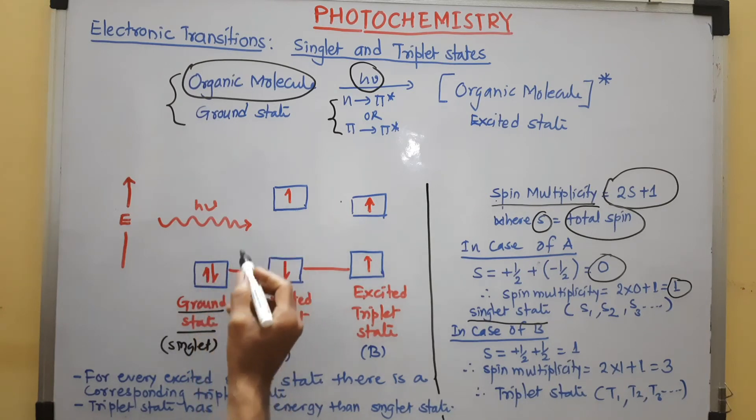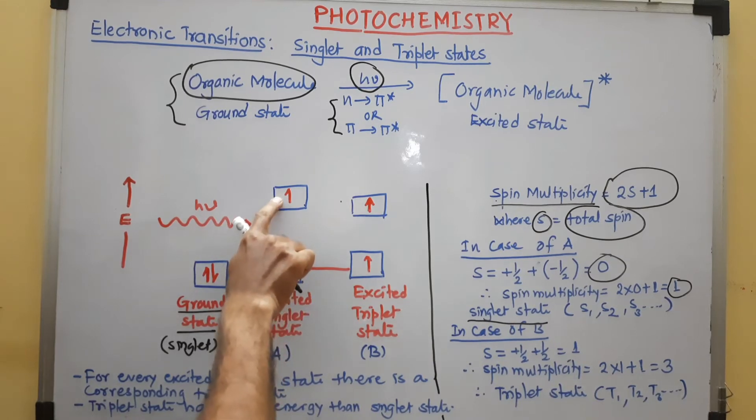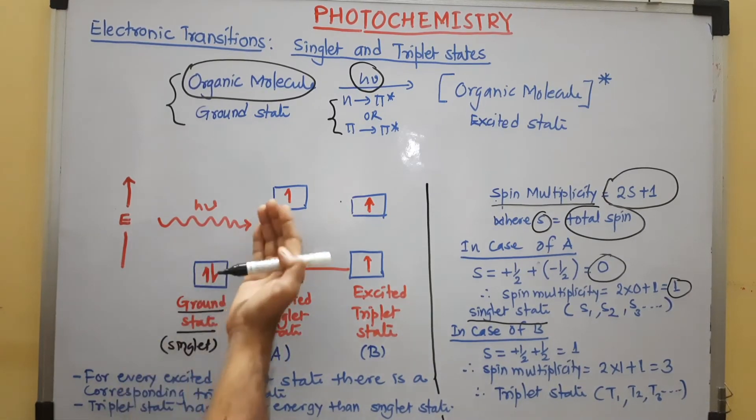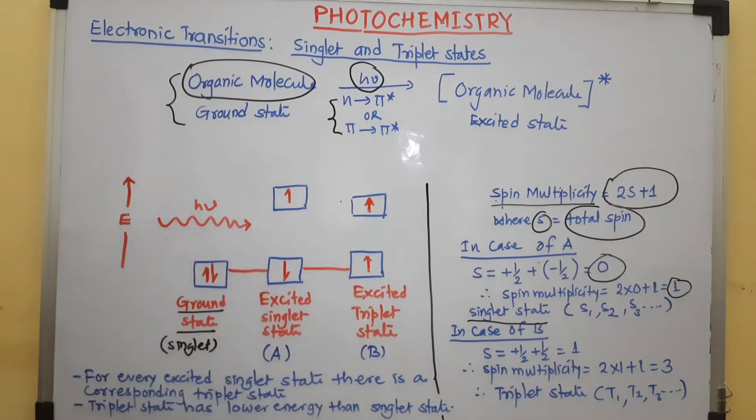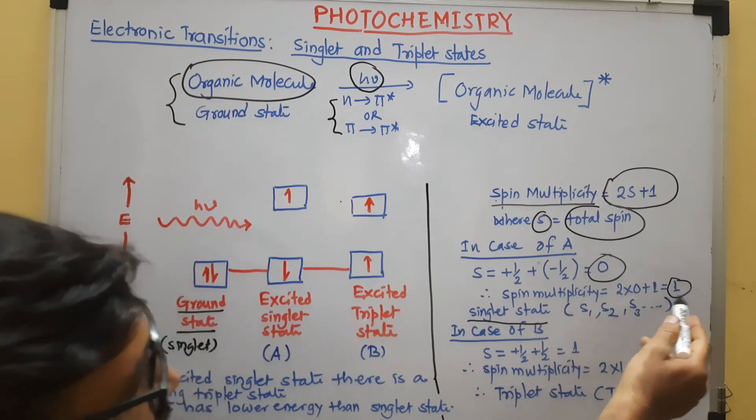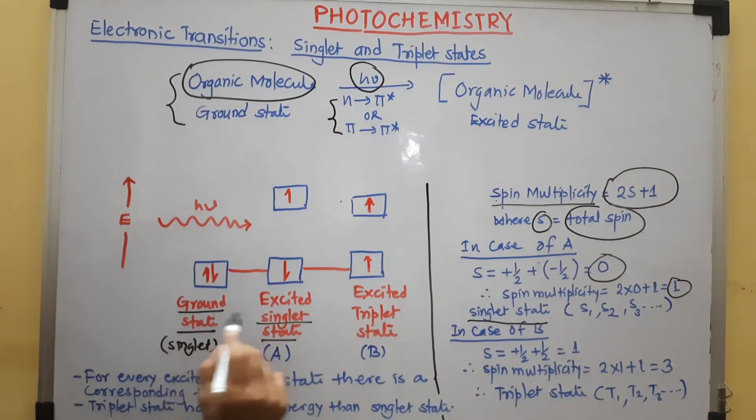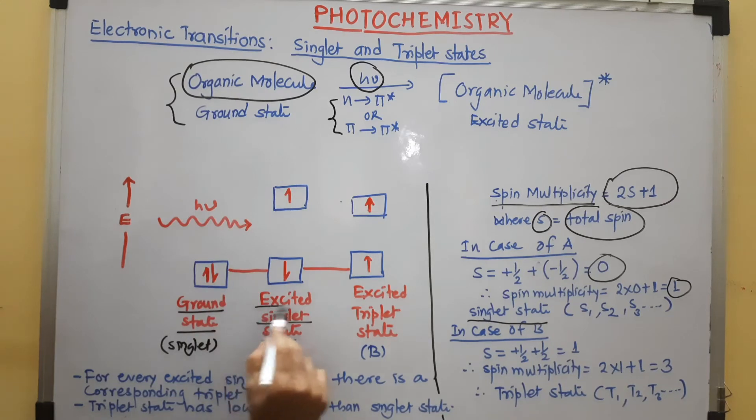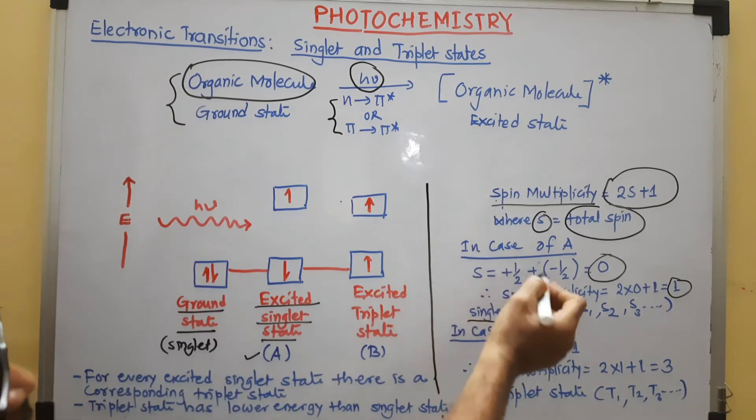When the excited electron retains its spin, that means no change in spin. This electron having spin plus half and this electron having spin minus half. The spin is retained which was in the ground state. By this calculation, the spin multiplicity is 1. So, this is a singlet state again. But this is not a ground state because molecule is in excited state. So, this is called excited singlet state that is given A.